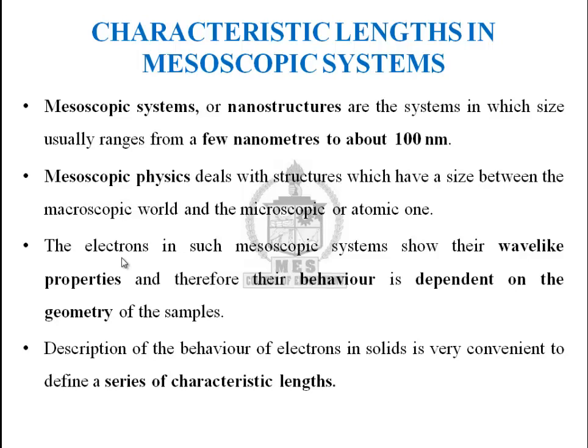In mesoscopic systems, electrons have wave-like properties. In order to describe the nature of those electrons, we use a set of parameters such as characteristic length.